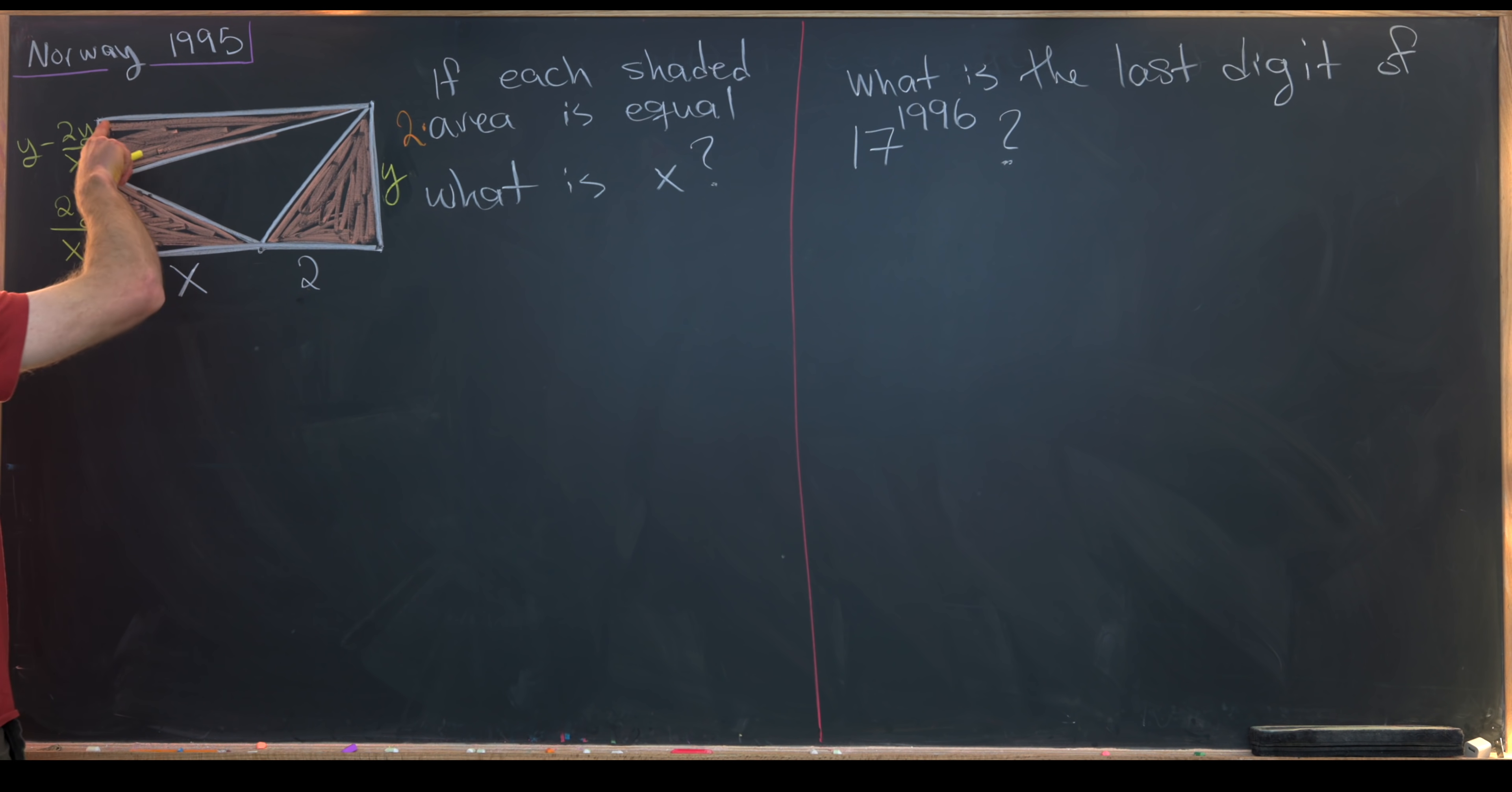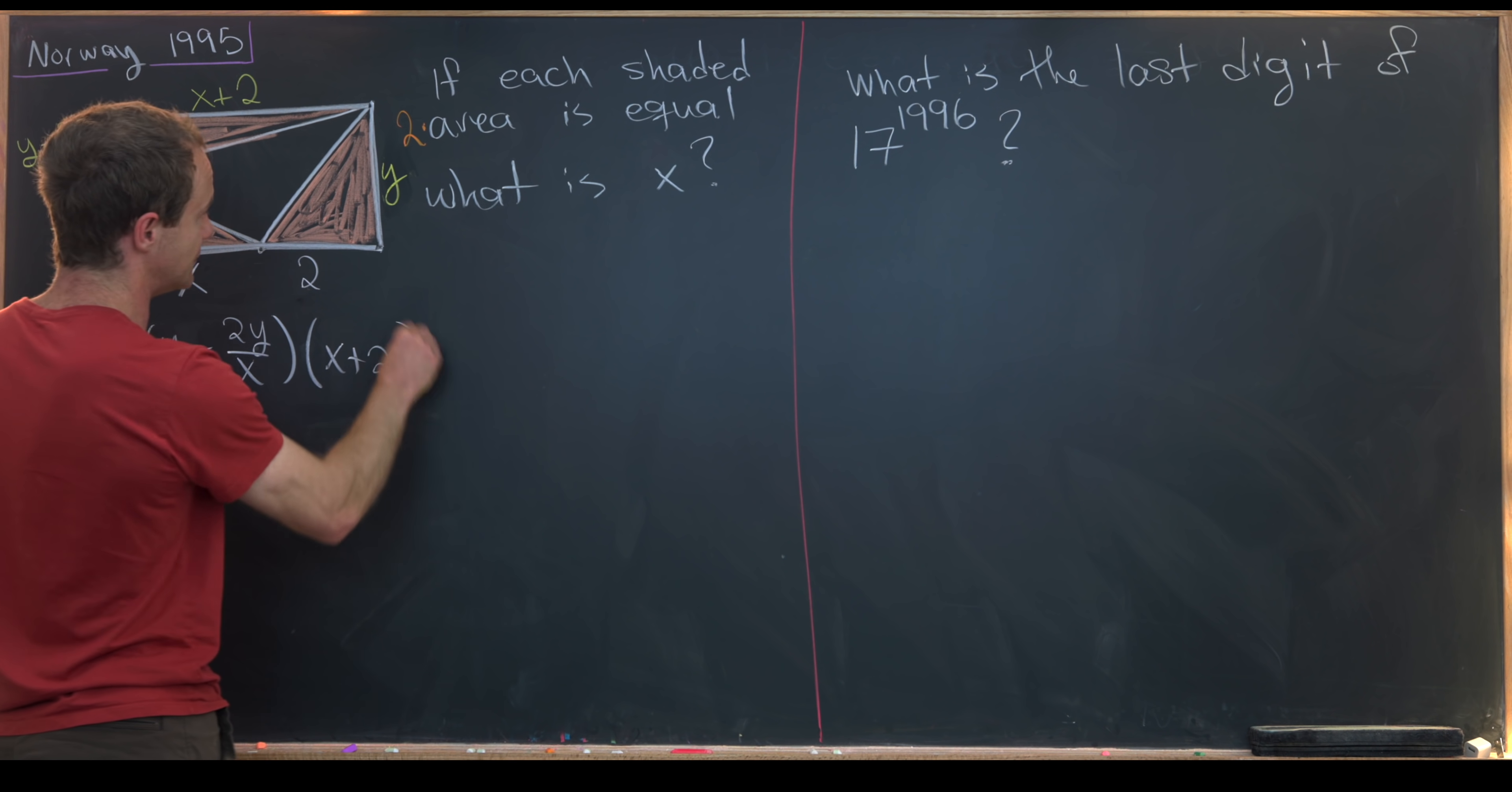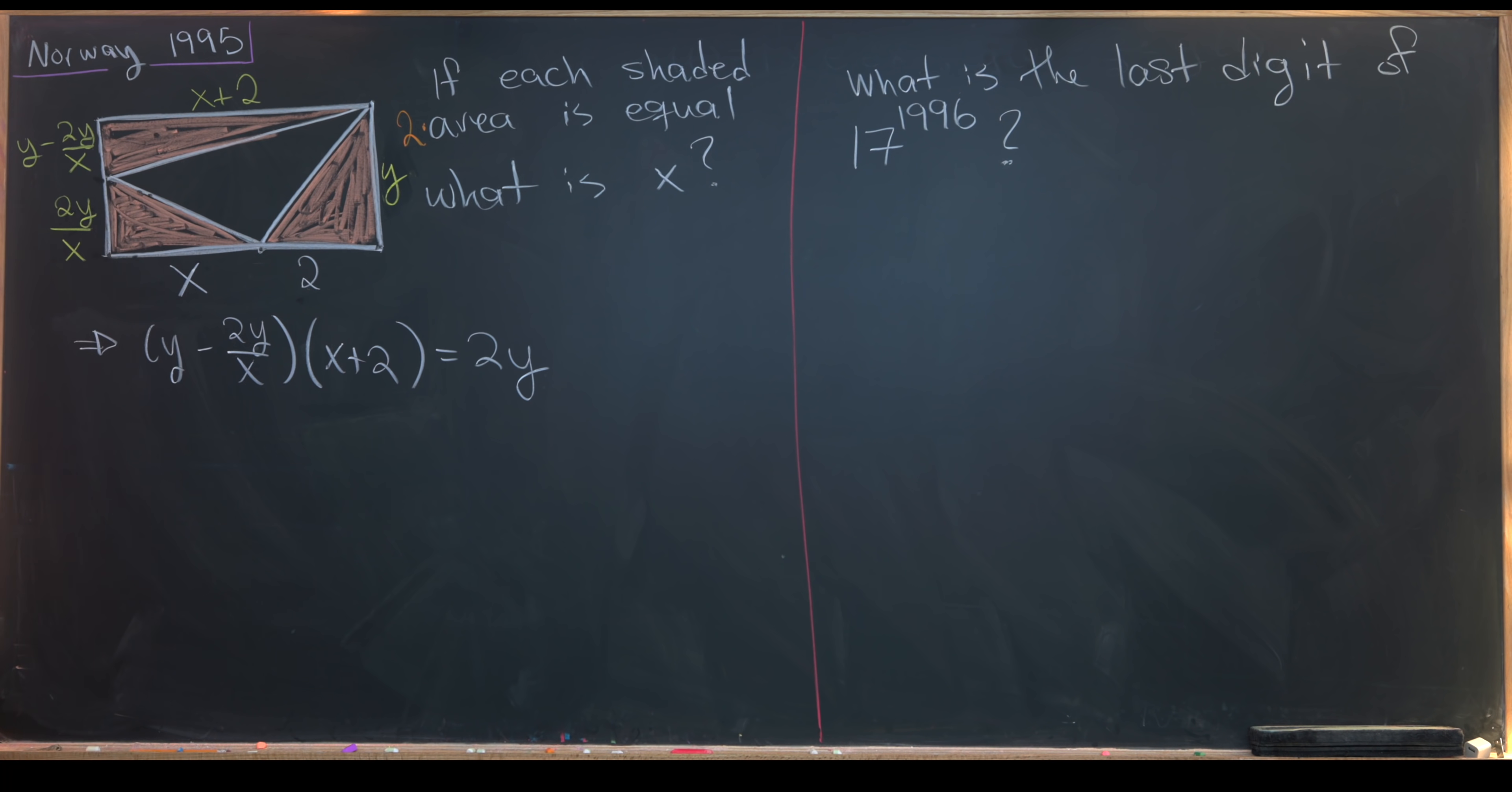Finally, we can fill in the length of the rectangle as x plus 2. Now we can set up an equation. Given the fact that all of these three triangles have the same area, we know the area of this triangle is equal to the area of this triangle, but that tells us that (y minus 2y over x) times (x plus 2) must be equal to 2 times y.